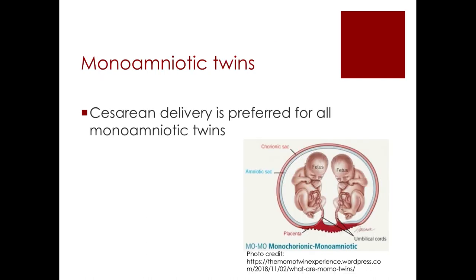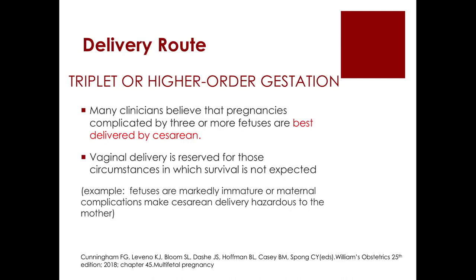For monoamnionic twins, cesarean delivery is preferred. For triplet or higher-order gestation, delivery is best accomplished by cesarean. Vaginal delivery is only reserved for circumstances in which survival is not expected, such as markedly immature fetuses or when maternal complications make cesarean delivery hazardous.